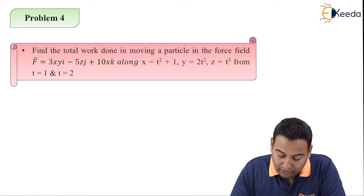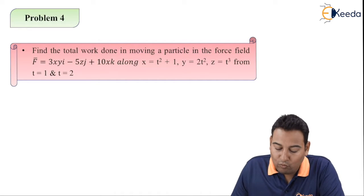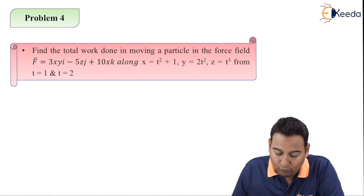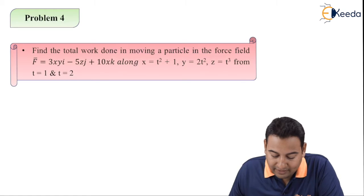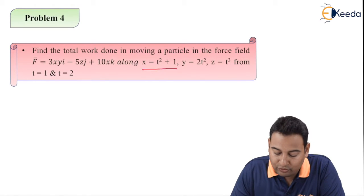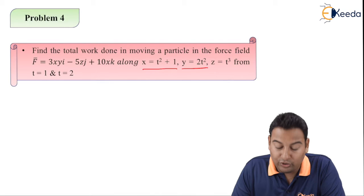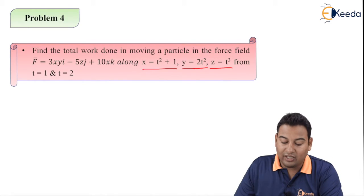We need to find the total work done in moving a particle in the force field F bar is given, along x equal to t square plus 1, y equal to 2t square, z is equal to t cube, from t is equal to 1 and t is equal to 2.